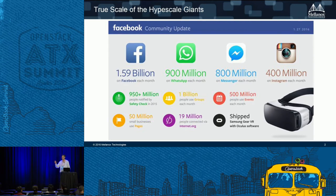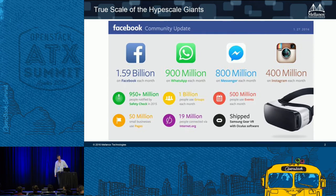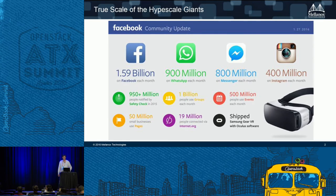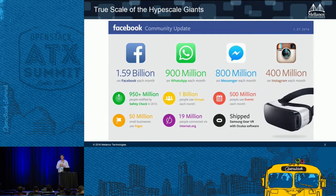Most of them consider what we do part of their secret sauce and don't let us talk about it publicly, although a couple do. Facebook and Microsoft have both publicly talked about using our interconnects inside their data centers. With over a billion users on Facebook, all of these applications are driving more and more data. Really, building clouds is all about doing so very efficiently, rapidly, and at a very cost-effective price point.